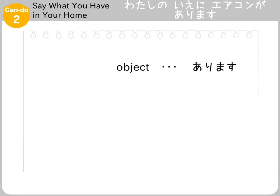To express the existence of an object that is not alive or a plant, you will use the verb あります. But to express the existence of people and animals — living things — you will use the verb います.